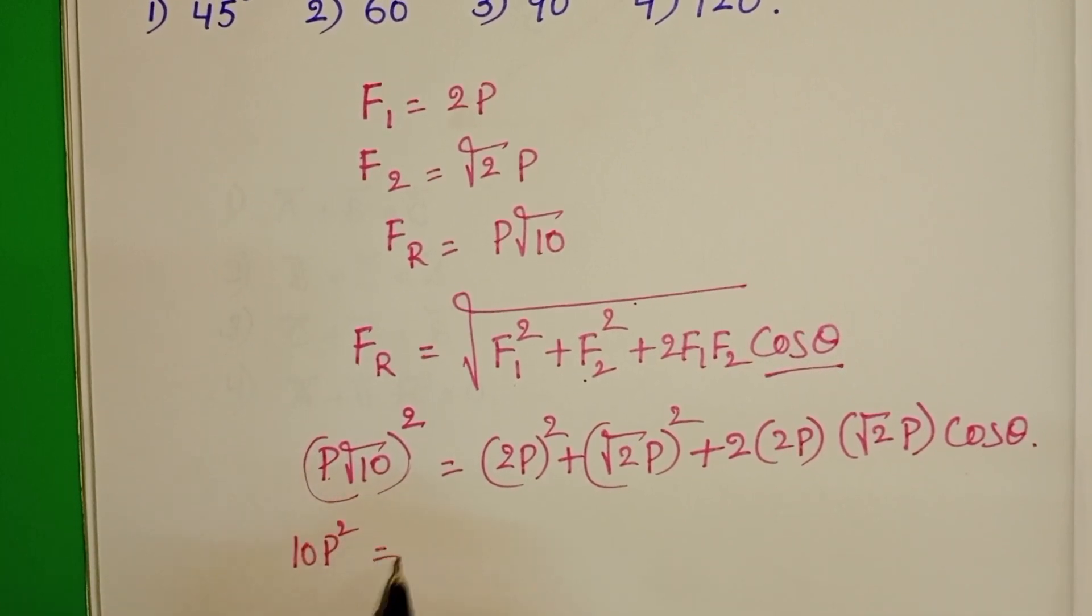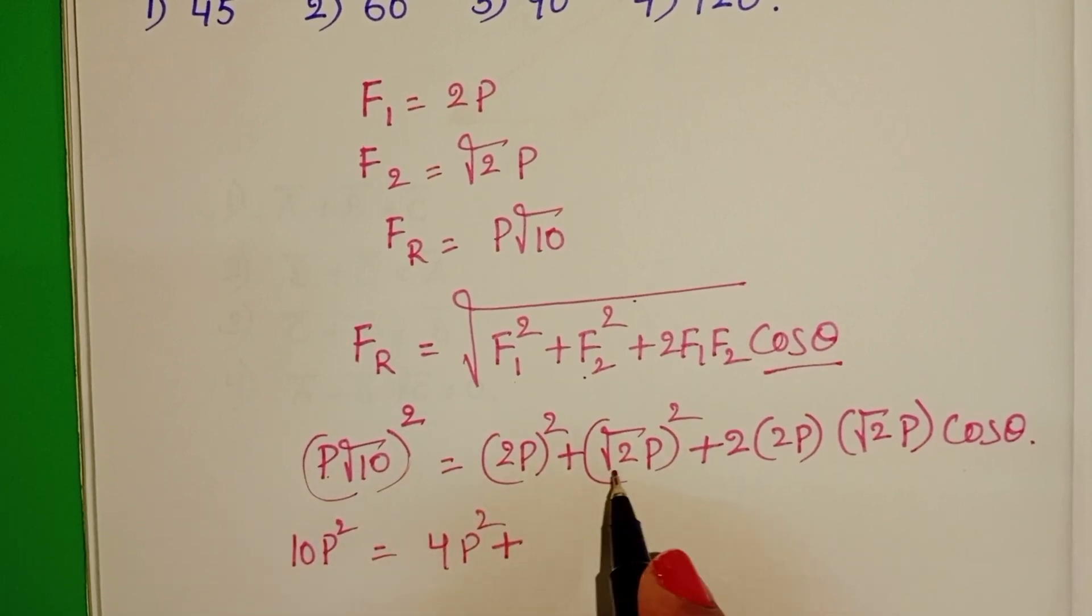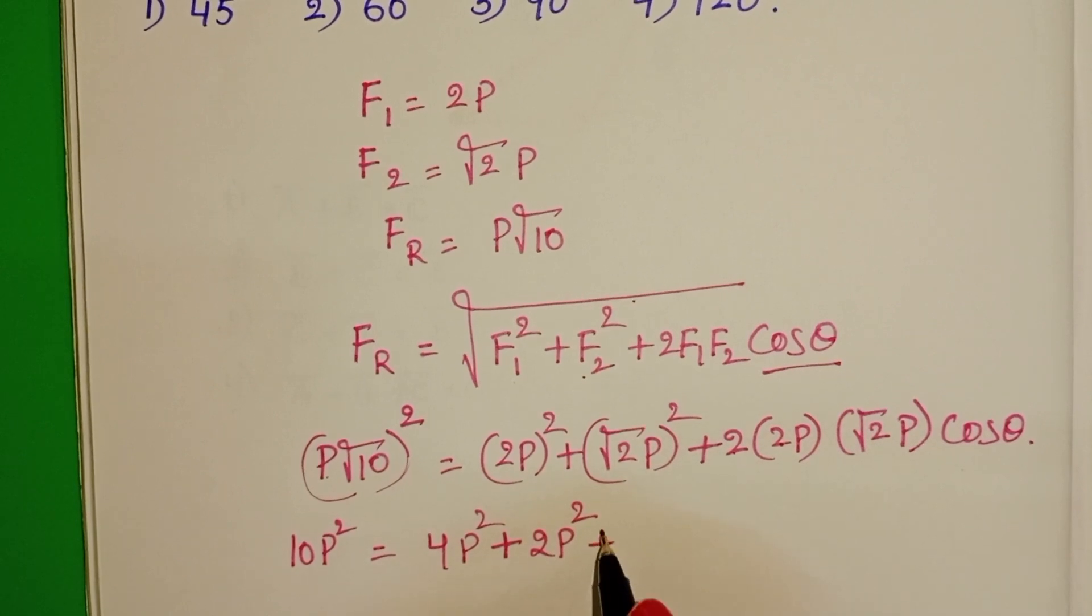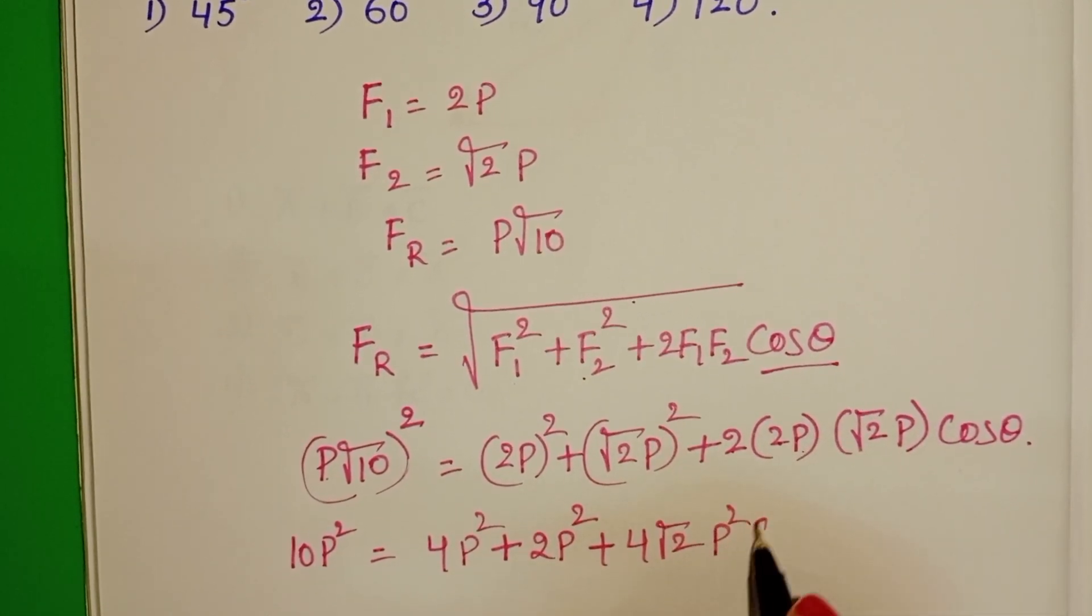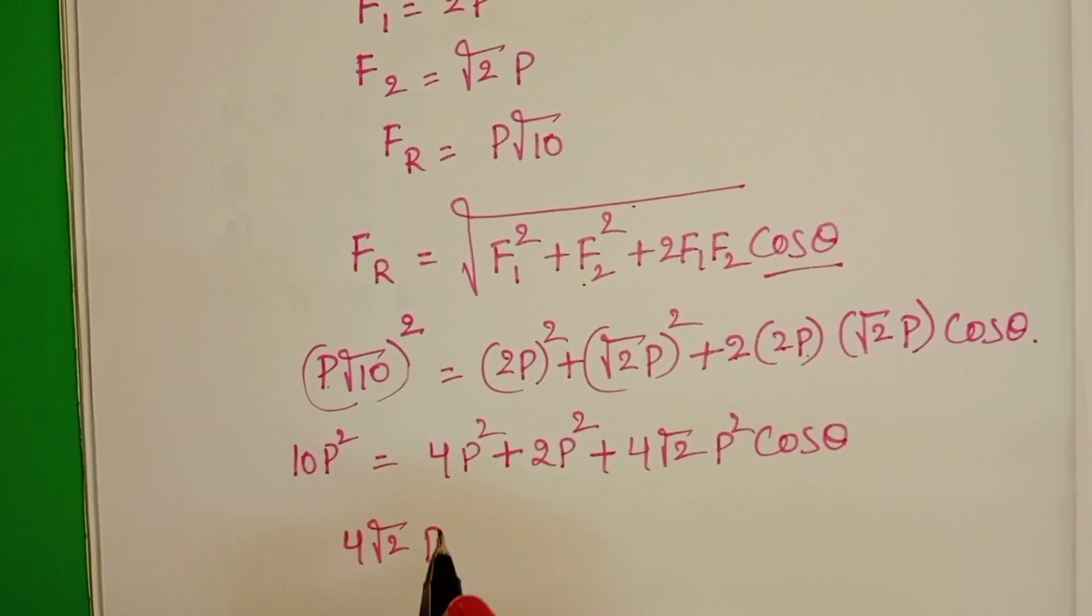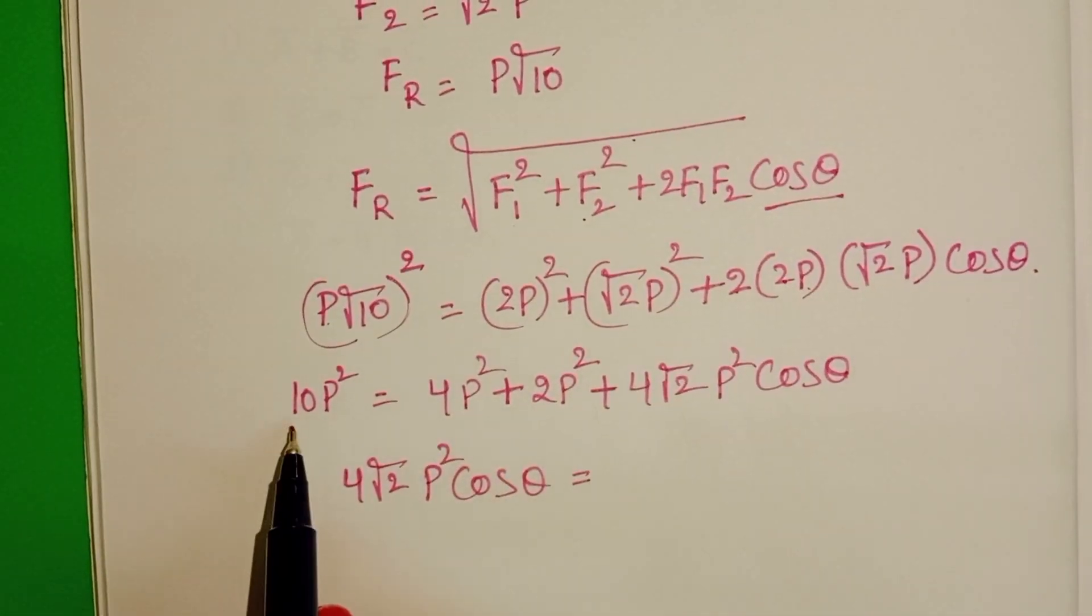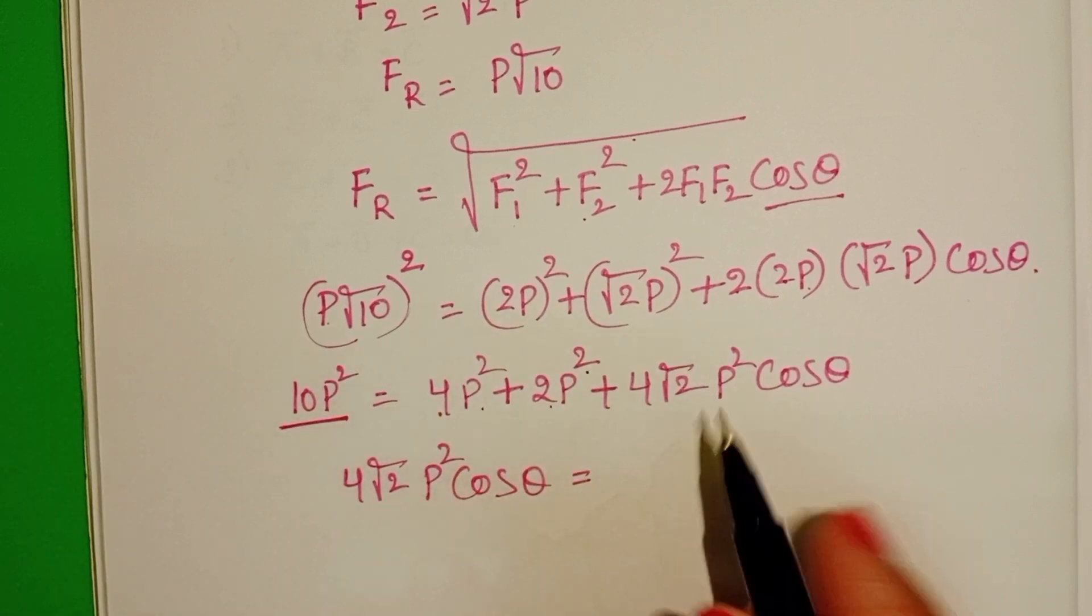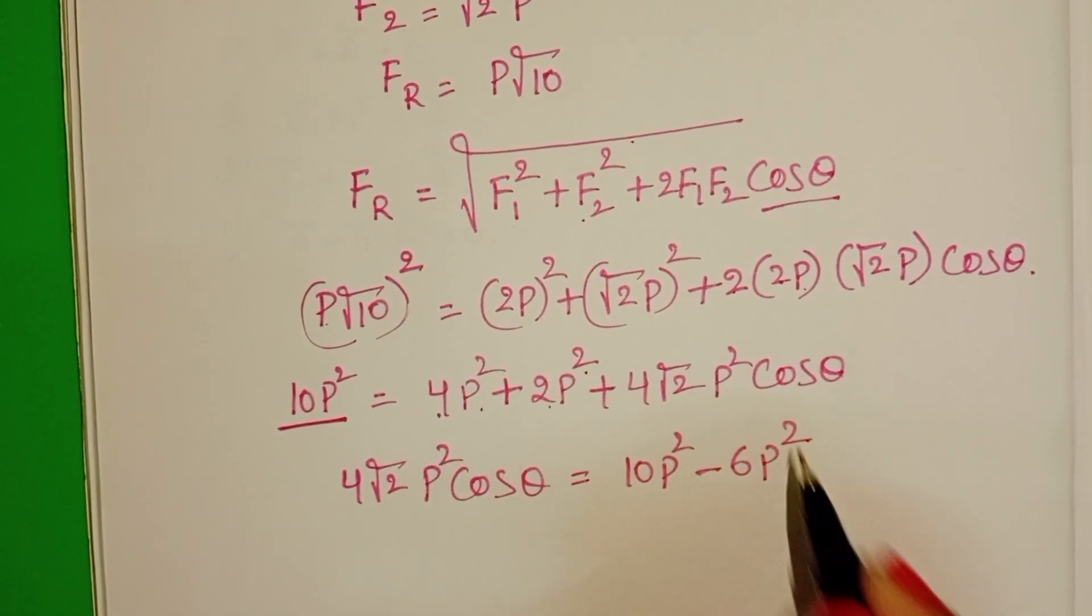So, 10P square equals 4P square plus 2P square plus 4 root 2P square cos theta. Simplifying, 10P square minus 6P square.